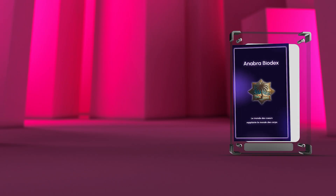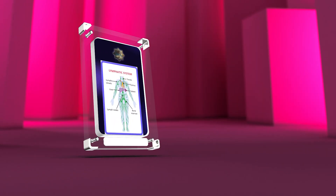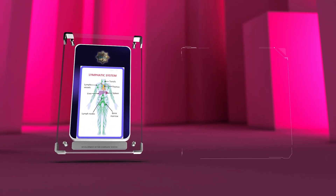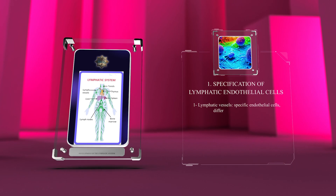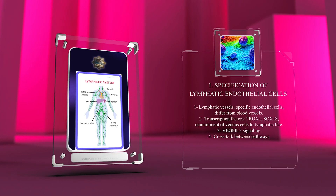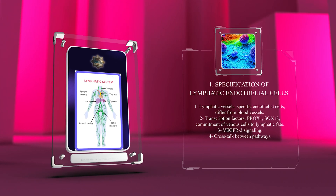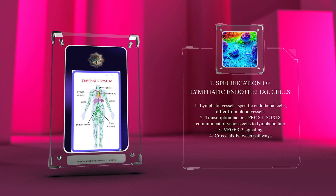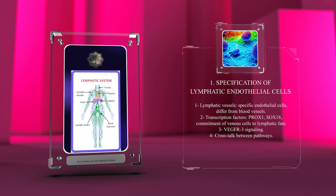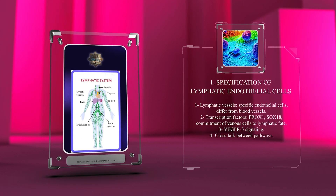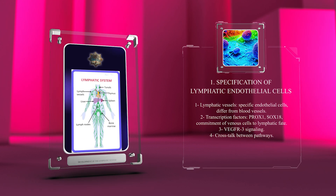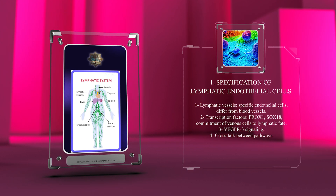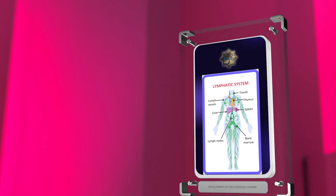Lymphatic vessels have specific endothelial cells that differ from blood vessels. Transcription factors like PROX1 and SOX18 promote the commitment of venous cells to a lymphatic fate. VEGFR3 signaling and crosstalk between pathways also play important roles.